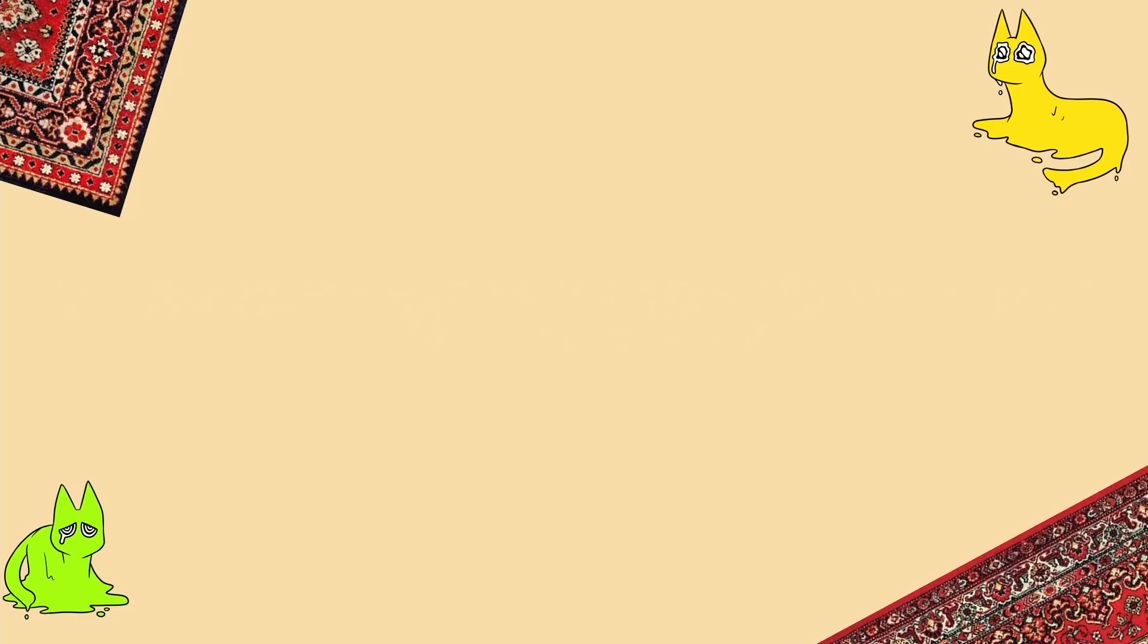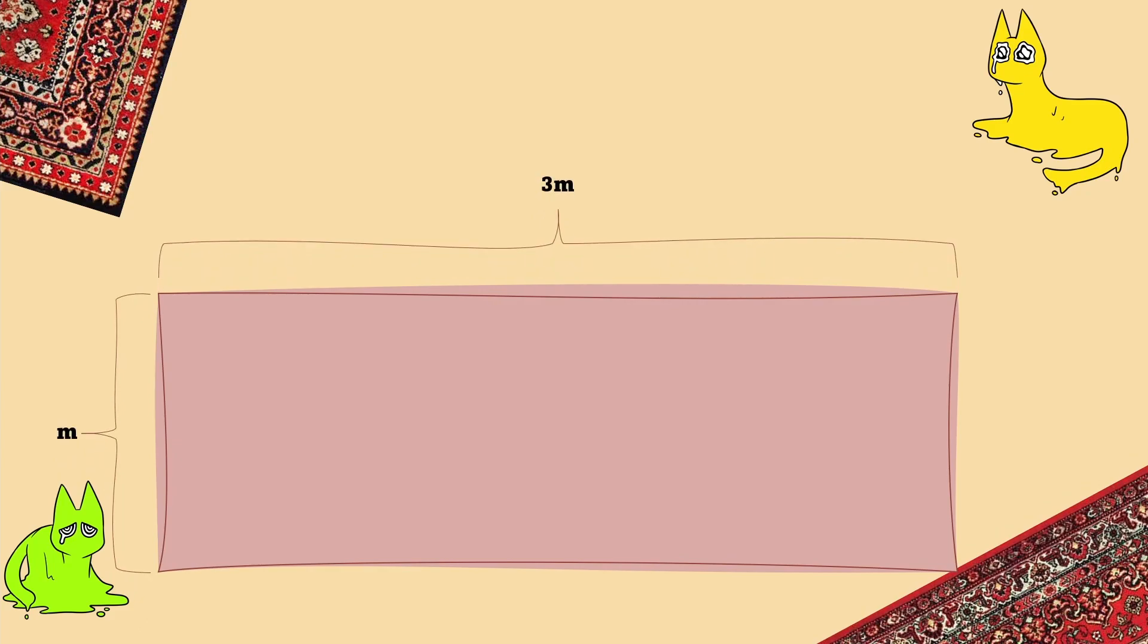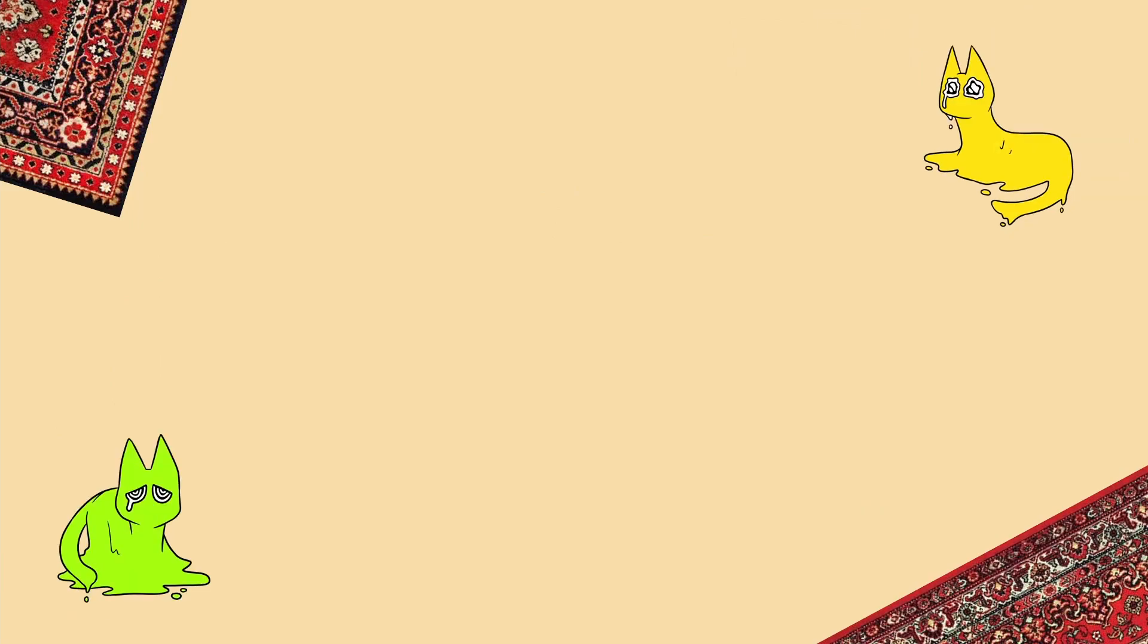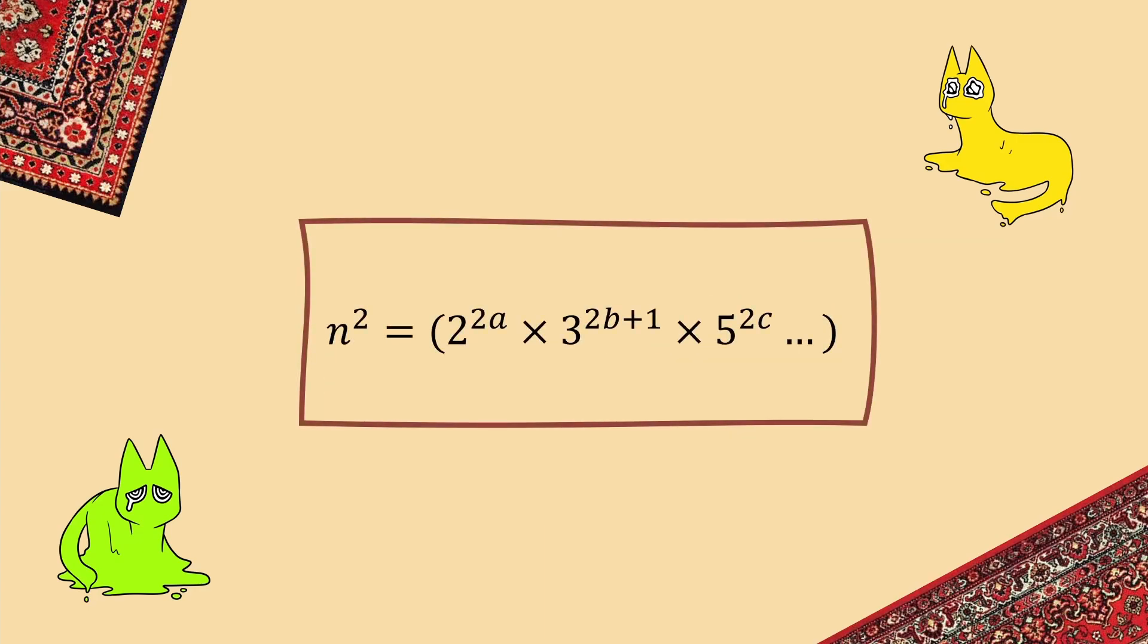So if the two-factor carpet isn't possible, what about a carpet that's three times as long as it is wide? Could you cut that one up and turn it into a square? Luckily, we can pretty much use the same logic as last time. n squared equals 3m squared, and then by bringing the exponent in and multiplying it by 3, we get a factor of 3, which is to an odd power, straight away.